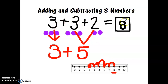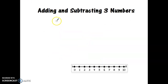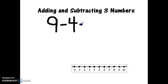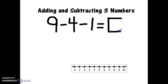Let's solve a quick subtraction problem. Let's say that I start with the number nine, then I'm going to take away four, and then take away one more. I want to know what that equals, so I need to figure out nine minus four minus one. Let's use some pictures to help us.